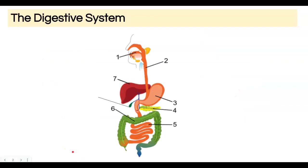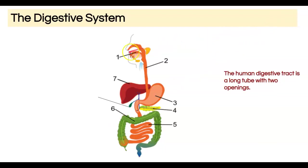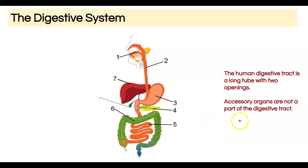The digestive tract is basically the long tube that starts at the mouth and moves all the way through your body in one continuous tube. The accessory organs are not part of this tube — they are all the pieces involved in digestion that are not connected to that tube.